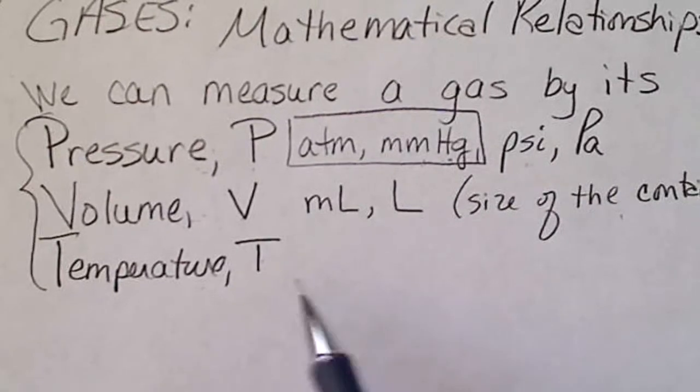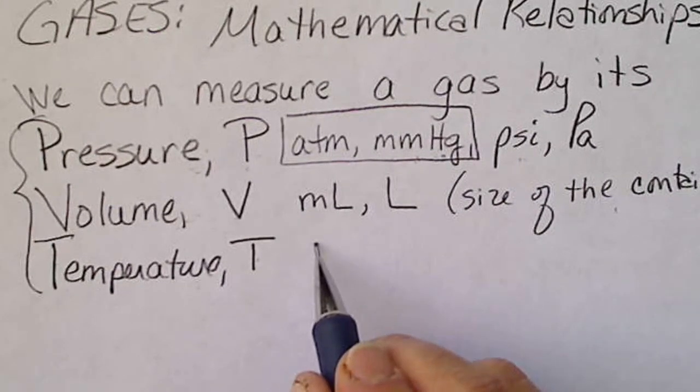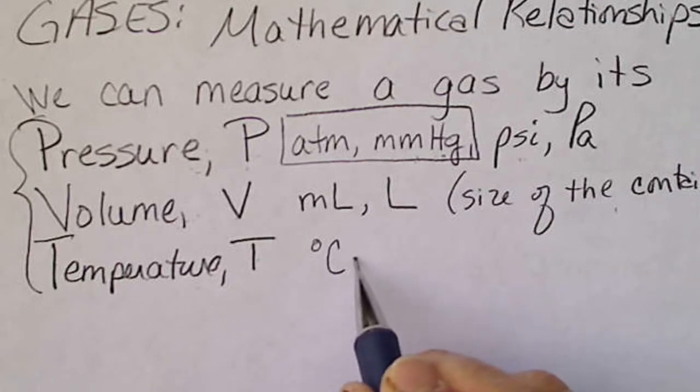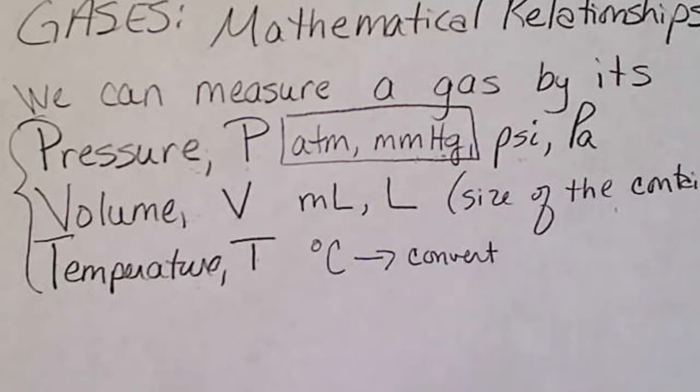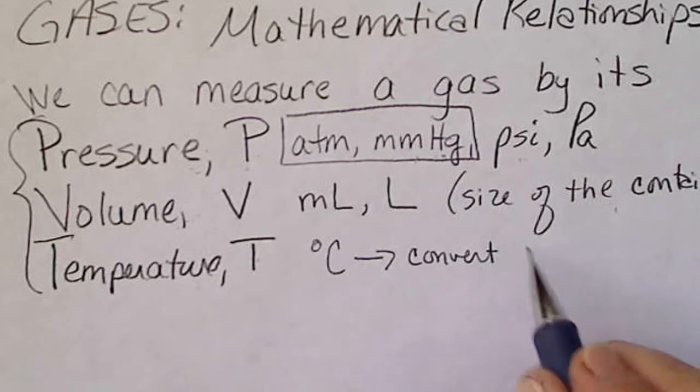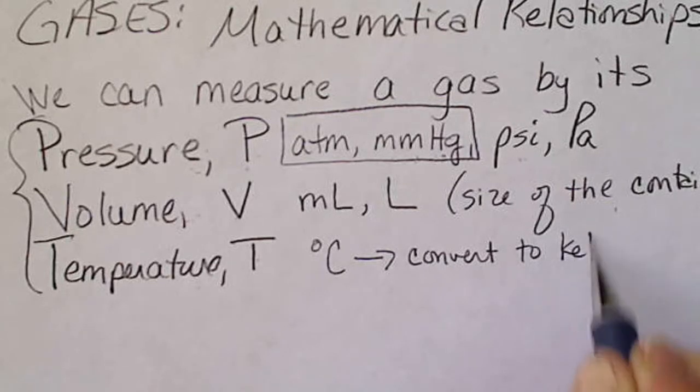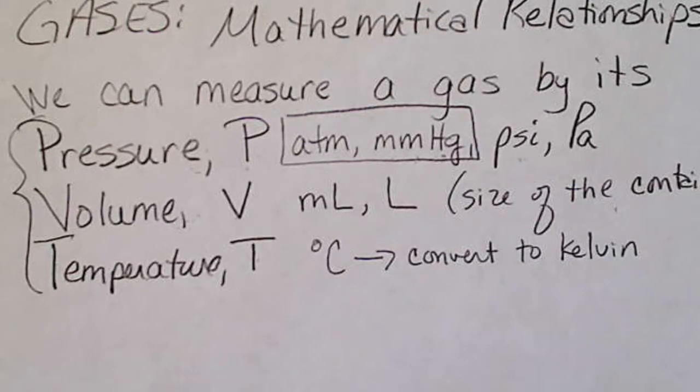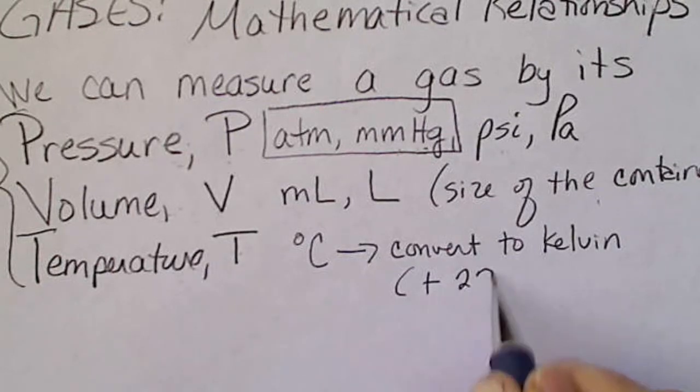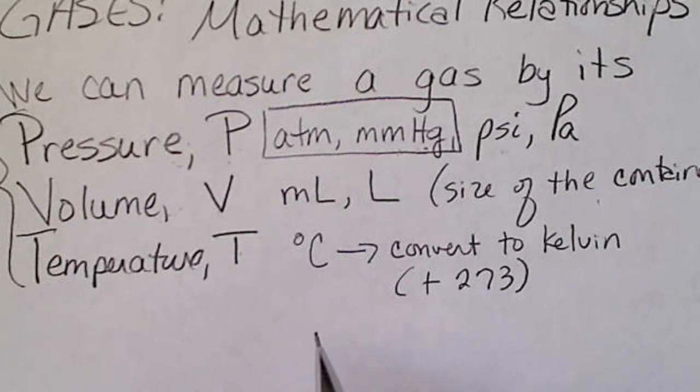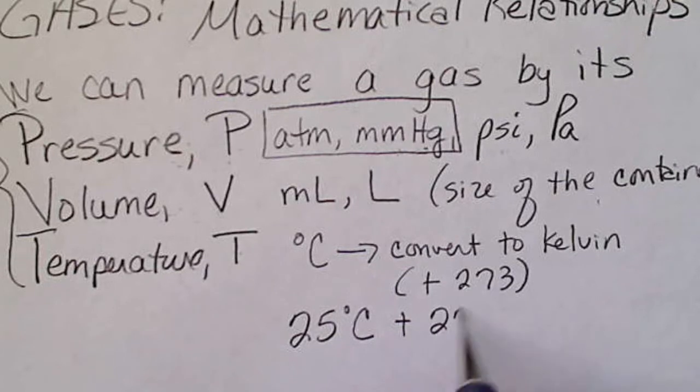And the temperature of a gas, our temperature might be in degrees Celsius, but we have to convert that to Kelvin. So we have to use the temperature scale that has an absolute zero. So we'll convert to Kelvin. And the easiest way to remember that is just we add 273 degrees. For example, room temperature is 25 degrees Celsius. So if we add 273, we're going to get 298 degrees Kelvin.